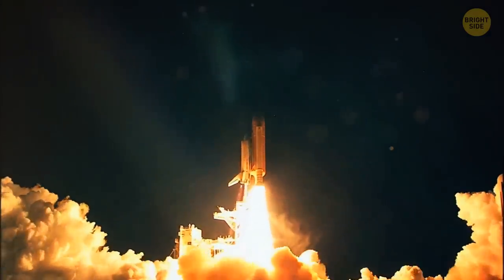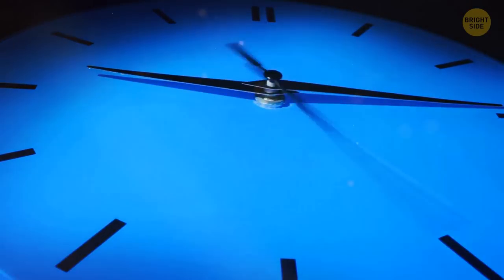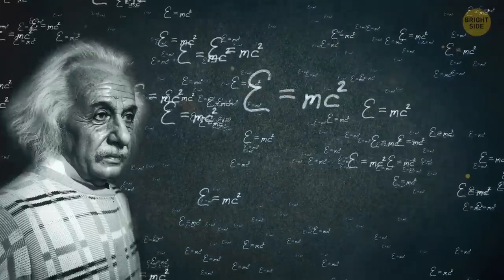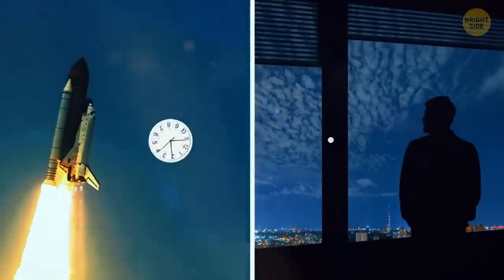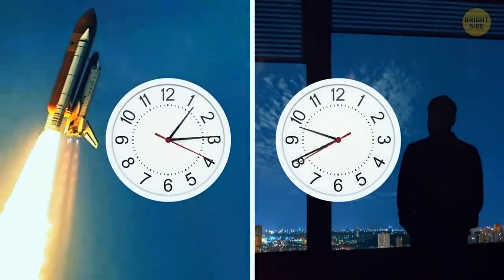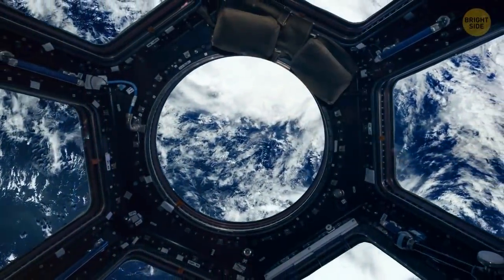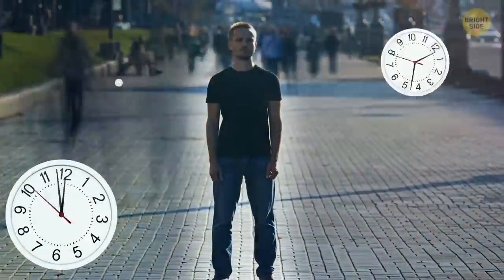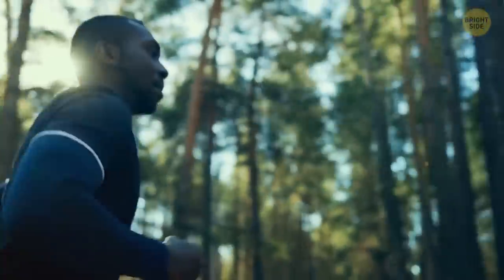When the astronaut went into space and his slightly older twin brother Mark stayed on Earth, the age gap between them increased thanks to his time in orbit. And it's all down to Einstein's theory of relativity. What it suggests is that time moves more slowly for objects in motion than it does for a stationary observer. The faster you move and accelerate, the more time slows down.